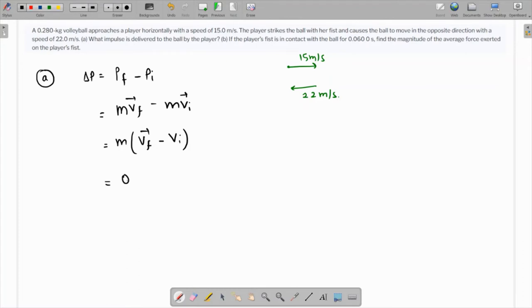That's going to be 0.28, which is the mass, times the final velocity of 22 minus the initial velocity of minus 15, because that's in the opposite direction. Like I said, the two minuses become a plus, and 22 plus 15 is 37.